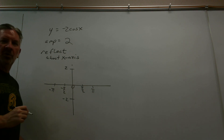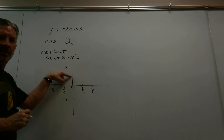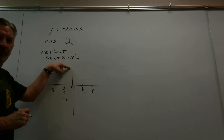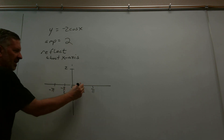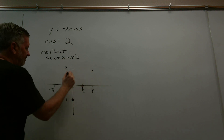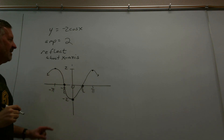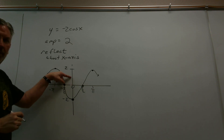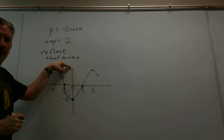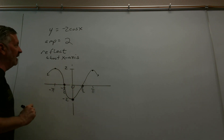Ask yourself what the original cosine graph does on the y-axis: it crosses at (0, 1), but we've changed the amplitude to two and there's a reflection about the x-axis. So that reflects down to the point minus two — that's a low. On either side you're going to have a middle, and then you're going to have a high. The original cosine graph crosses at (0, 1), the amplitude changed to two, and because of the negative coefficient, reflecting over the x-axis puts us at minus two. That's the graph.